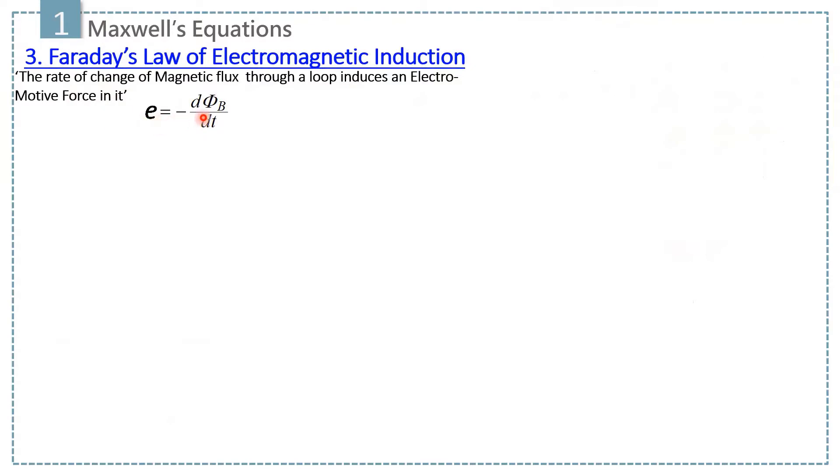Mathematically, E is equal to minus derivative of phi B, where E is the electromotive force and phi B is the magnetic flux.